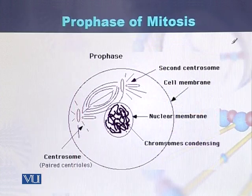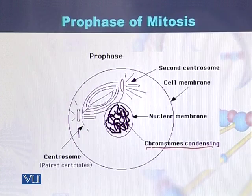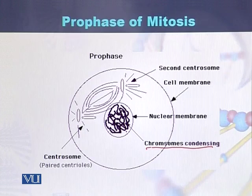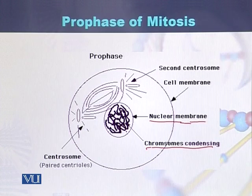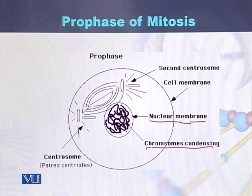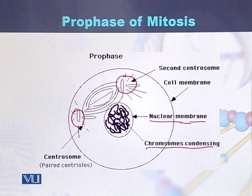In this diagram we can see that within the cell there is a nucleus, and in the nucleus there are chromosomes which have been condensed — this is the event of prophase where chromosomes are condensed. The nuclear membrane disappears during prophase, while the centrosomes or centrioles divide into two and take position on the poles of the cell, emitting spindle fibers which spread within the cell.